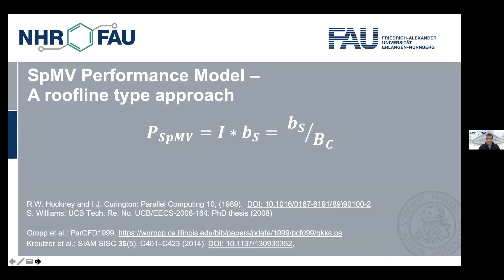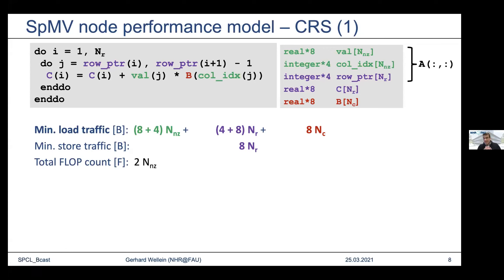Our performance model approach is a roofline-type approach. The performance of a memory-bound kernel, according to the roofline model, is the computational intensity times the main memory bandwidth. For historical reasons, we use the code balance, which is the inverse of the computational intensity. Roofline modeling is very established, and estimating limits for the code balance is nothing new — it already appears in the paper of Bill Grob and David Keyes, and we have also done some work in that context.